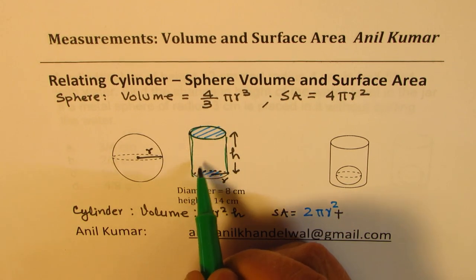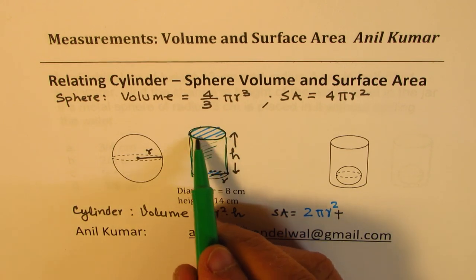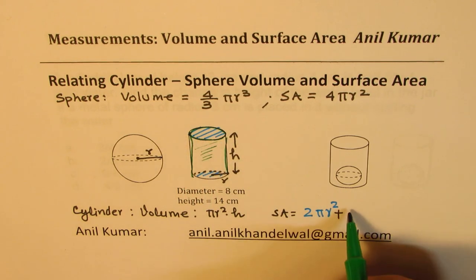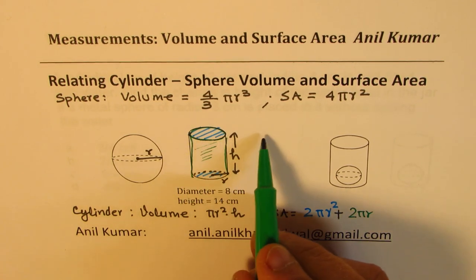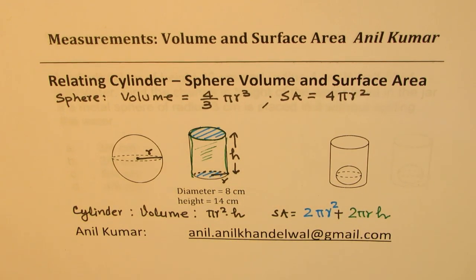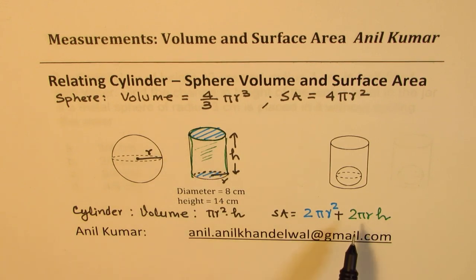The lateral surface, when cut open, is a rectangle of length 2π r and height h. So the total surface area for a cylinder is 2π r² for the two circles, plus the lateral area of 2π r h.